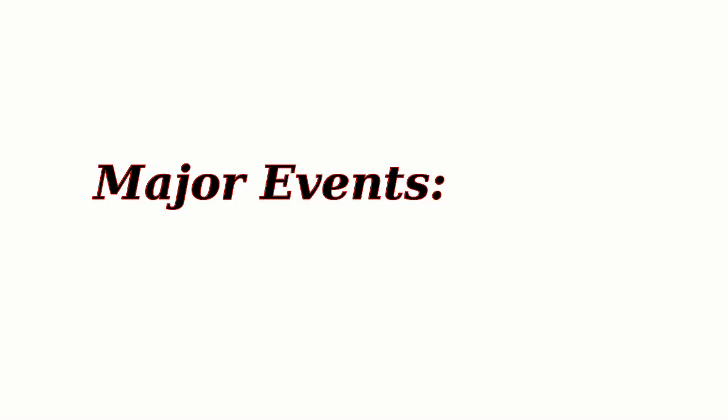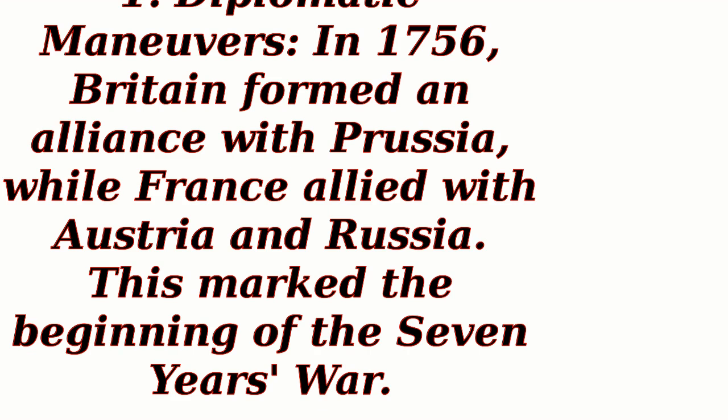Major events: 1. Diplomatic maneuvers — in 1756, Britain formed an alliance with Prussia, while France allied with Austria and Russia. This marked the beginning of the Seven Years' War.